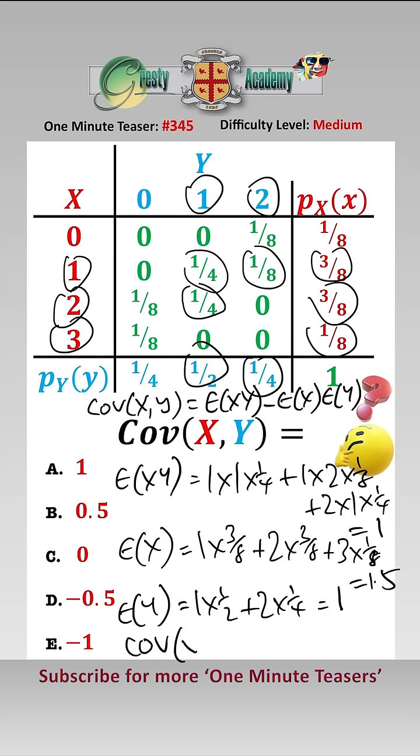So finally, covariance of X and Y is equal to 1 minus 1.5 times 1, which is minus 0.5, which is answer D.